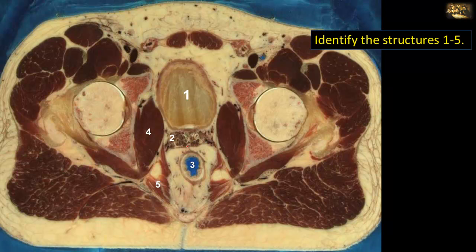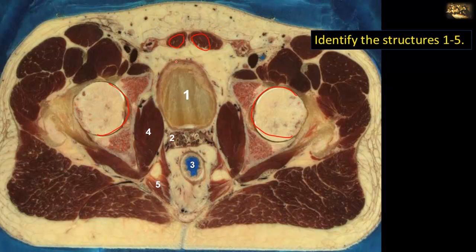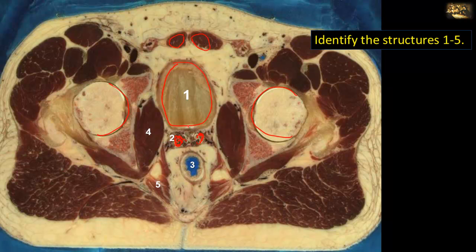This is a transverse section through a male pelvis. Anteriorly is the rectus abdominis — the two recti are narrow because we are at the lower part of the abdomen. Behind that is the urinary bladder, slightly distended, which is why it rises above the pubic symphysis into the abdomen. Posterior to the urinary bladder are the seminal vesicles, separating the bladder from the rectum. The muscle closing the obturator foramen on the sidewall of the pelvis is the obturator internus.